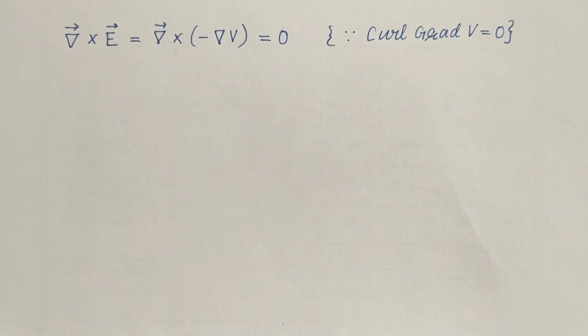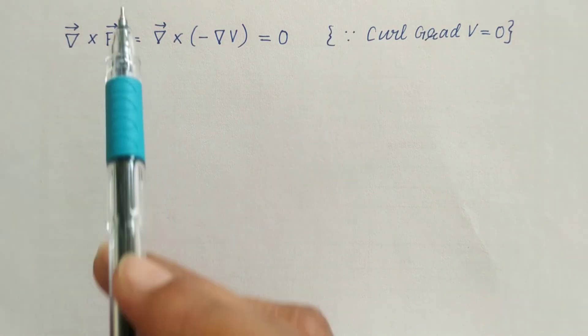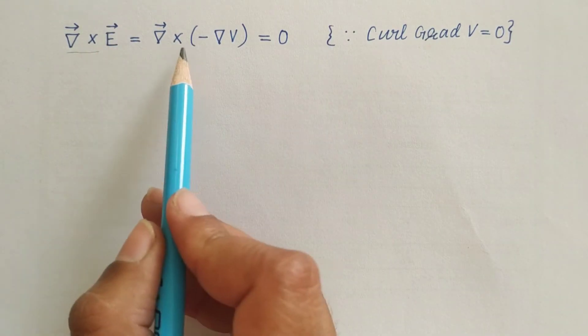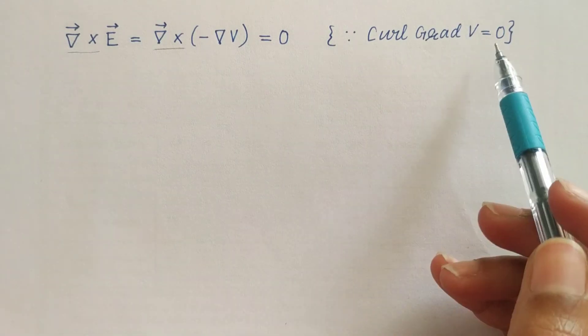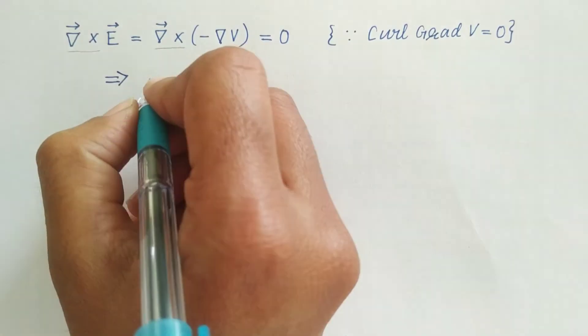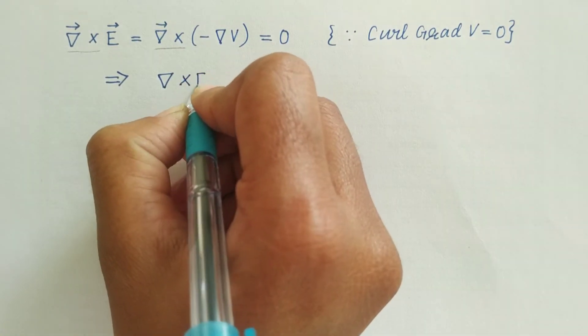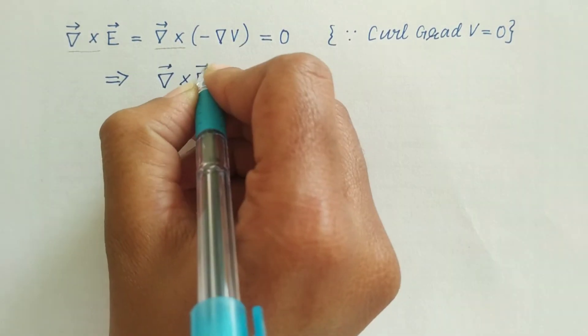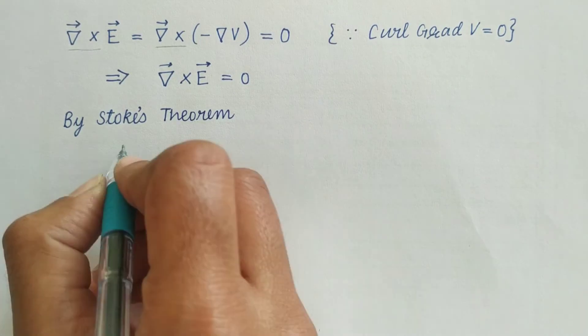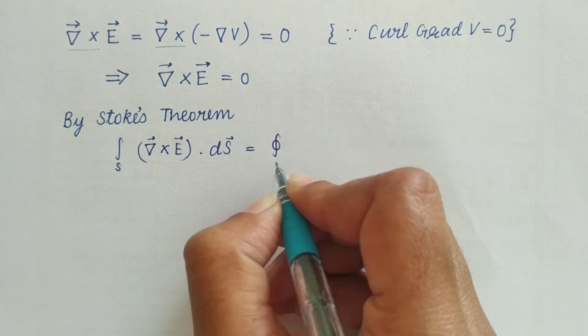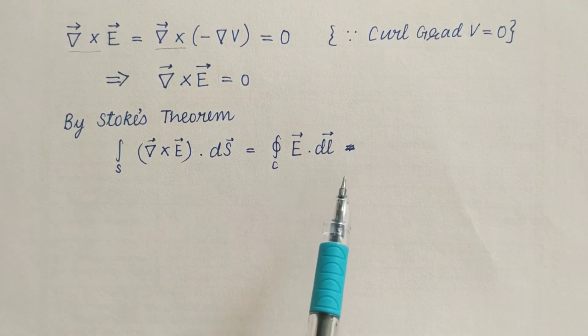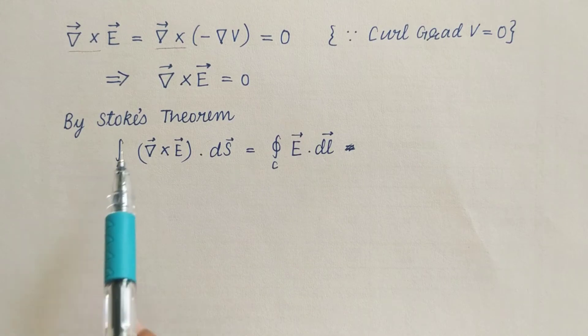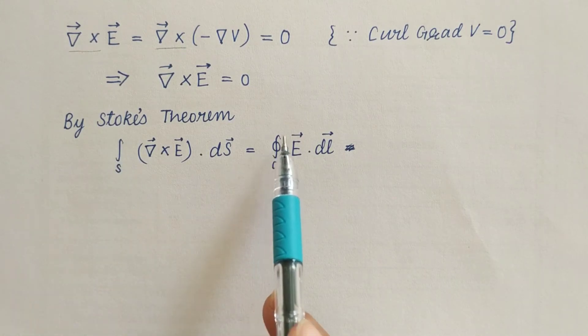We had taken curl both sides here and since the product of the curl and gradient is zero, therefore del cross E is equal to zero. And by Stokes theorem, this expression holds for an arbitrary open area S enclosing the curve C.